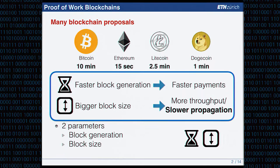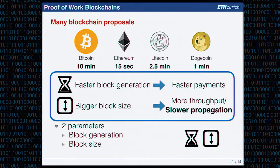Intuitively, if we increase the speed of the block generation time — for example, going from 10 minutes in Bitcoin to one minute in Dogecoin or even 15 seconds in Ethereum — we will get faster payments. If we have a bigger block size, increasing the number of transactions that we can accommodate within a block, we will get a higher throughput.